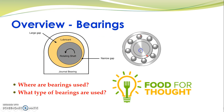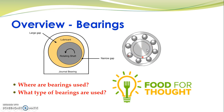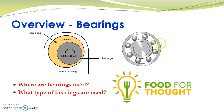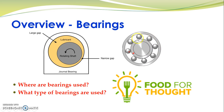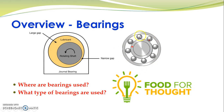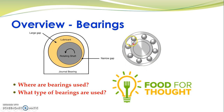Over here we have a rolling bearing — a deep groove Conrad ball bearing. It has an outer ring and an inner ring, and these two rings are separated using spherical balls. Some form of slight lubrication is also provided to further reduce friction.